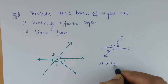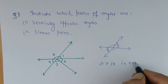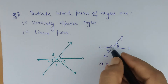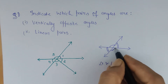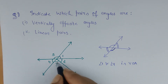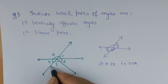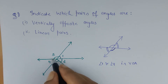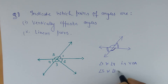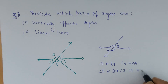Similarly, angle 5 and this complete angle — but here in this figure, this complete portion is covered by angle 2 and angle 3. So angle 2 plus angle 3, and angle 5 — angle 5 and angle 2 plus angle 3 form vertically opposite angles.